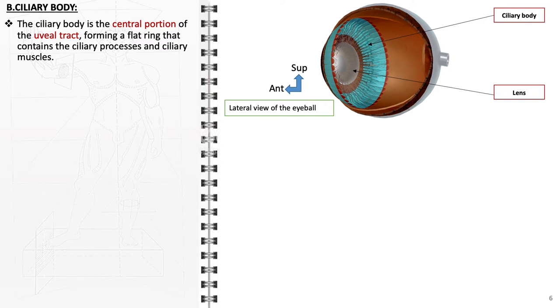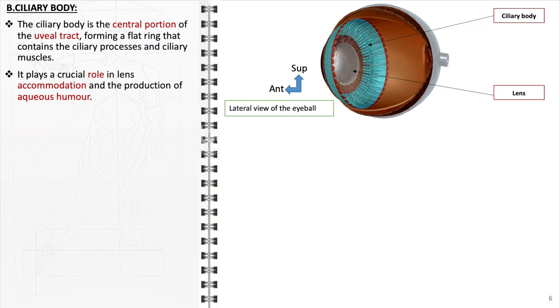The ciliary body, as the second component of the uveal tract, serves as the intermediary segment, forming a flattened ring that contains the ciliary processes and ciliary muscles. These structures are crucial in facilitating lens accommodation for focusing on objects at varying distances and in the production of aqueous humor that fills the anterior chamber of the eye.